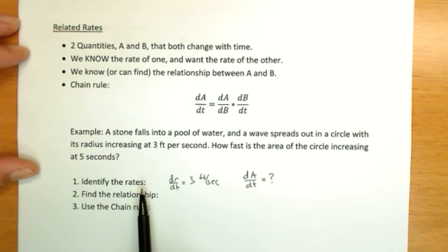So step one is always to identify the rates. dr/dt is 3, dA/dt is unknown. And that's how it'll be. One is known, one is unknown. Step two is find the relationship between the quantities.